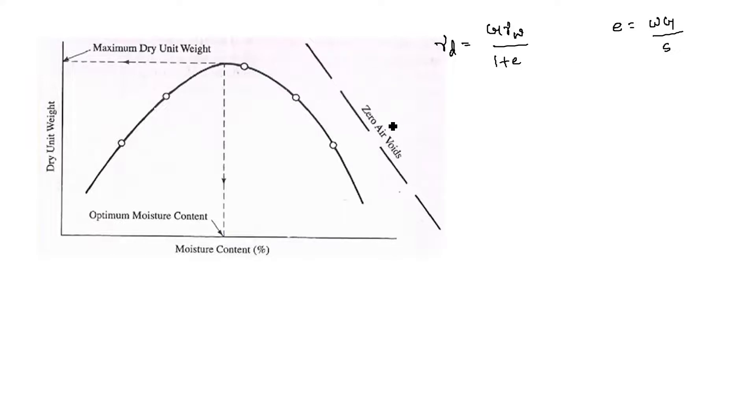Since this is a zero air void line, it means all the voids are filled with water—that is, 100 percent saturation. This corresponds to no air voids present in the soil sample.